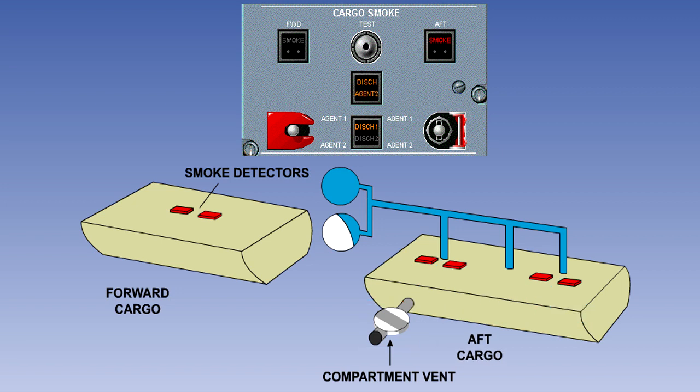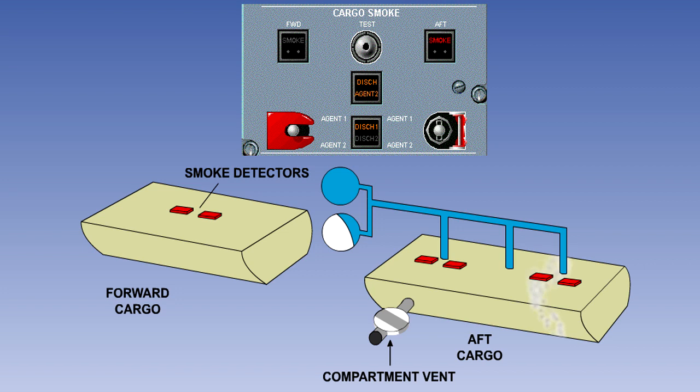If, after a preset period of time, the fire has not gone out, the discharge agent 2 light will illuminate. This is the cue for the pilot to once again raise the guard and discharge the second fire bottle into the compartment.